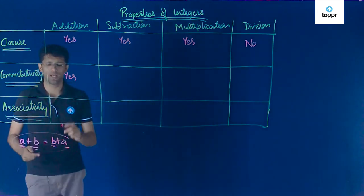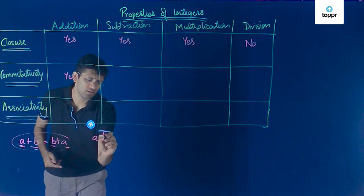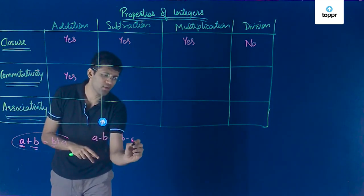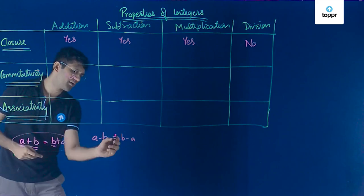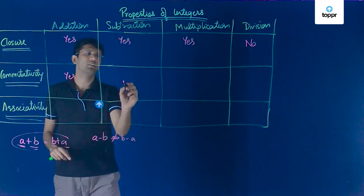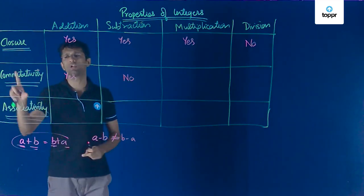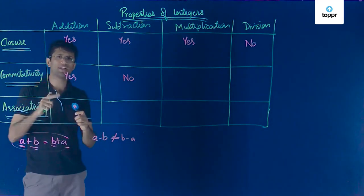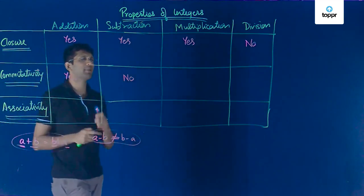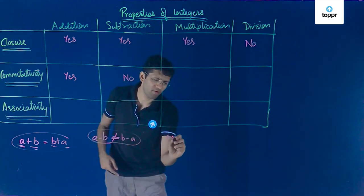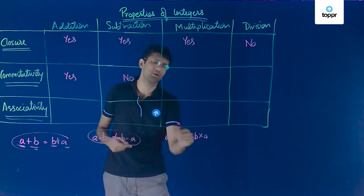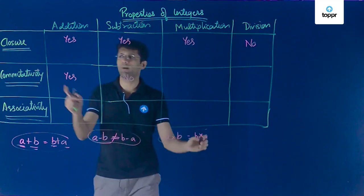Now let us check commutativity for subtraction. If commutativity were to apply, we would have a − b = b − a, but a − b is not always equal to b − a. So commutativity is not obeyed by subtraction. For multiplication, a × b gives the same result as b × a for any integers, so multiplication is a commutative operation.